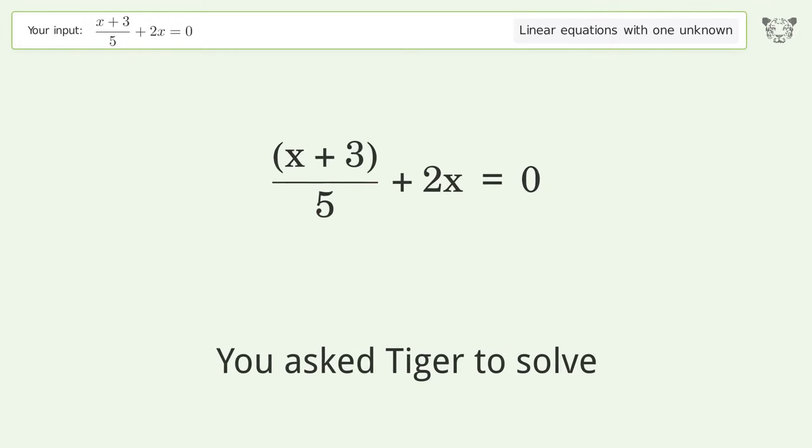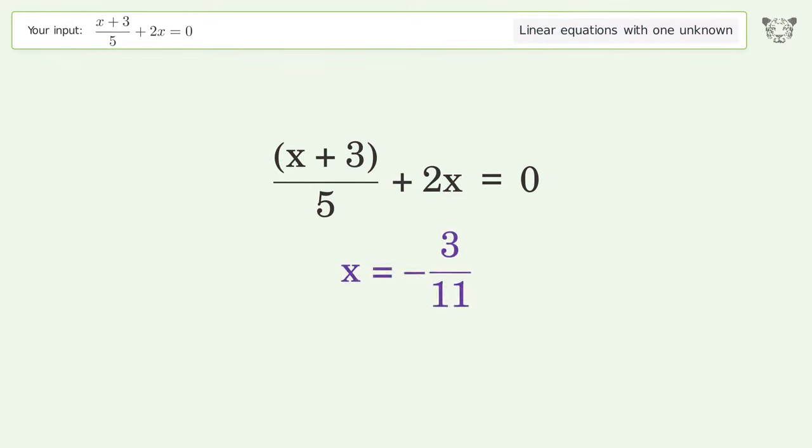You ask Tiger to solve this, which deals with linear equations with one unknown. The final result is x equals negative 3 over 11.